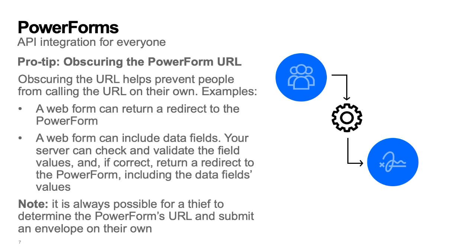Pro tip: obscuring the Power Form URL. Obscuring a URL helps prevent people from calling the URL on their own. A web form can return a redirect to the Power Form, or a web form can include data fields. Your server can then check and validate the field values, and if correct, return a redirect to the Power Form including the data field values. By using these techniques, the Power Form's URL is obscured from the signer. But with a little work, it is always possible for a thief to determine the Power Form's URL and submit an envelope on their own with their own settings.